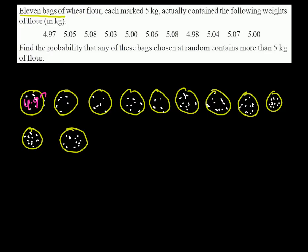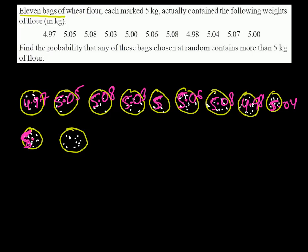In the first bag the quantity of flour is 4.97, in the second 5.05, in the third 5.08, then 5.03, then 5 kg, then 5.06, then 5.08, then 4.98, then 5.04, then 5.07, and finally 5 kg. So those are the first through eleventh bags, all filled with flour at different weights.